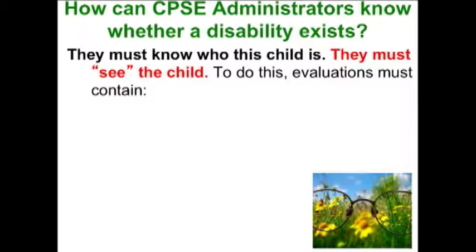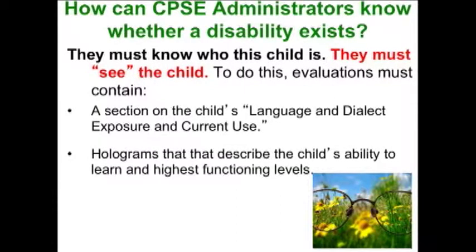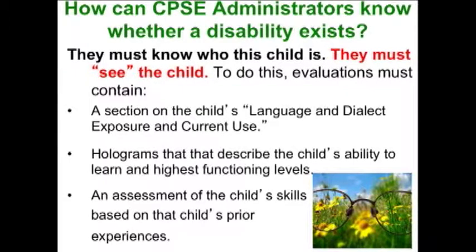So the evaluator must see the child. There has to be a section on dialect and language exposure and use. There have to be holograms — like Yoda from Star Wars — and there has to be an assessment of the child's prior skills based on that child's prior experiences, not my prior experiences, not yours, not the ones assumed in the standardized test. It doesn't really matter that a child is from Barbados and speaks Bajan English — how many of those kids are going to be represented in that normative sample?